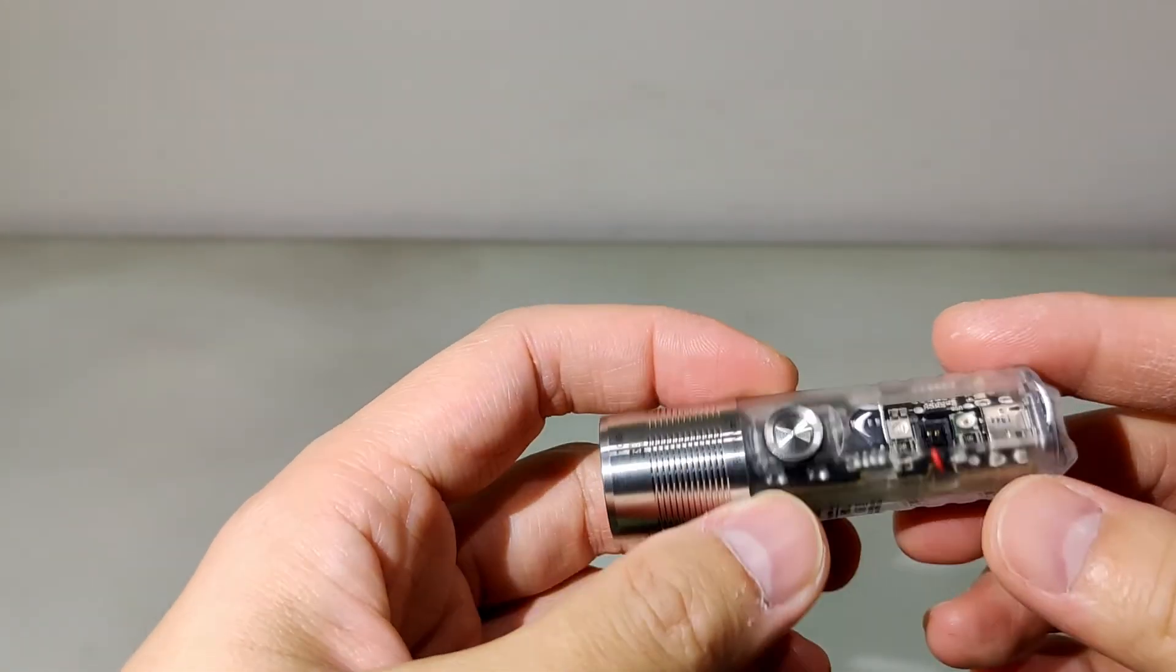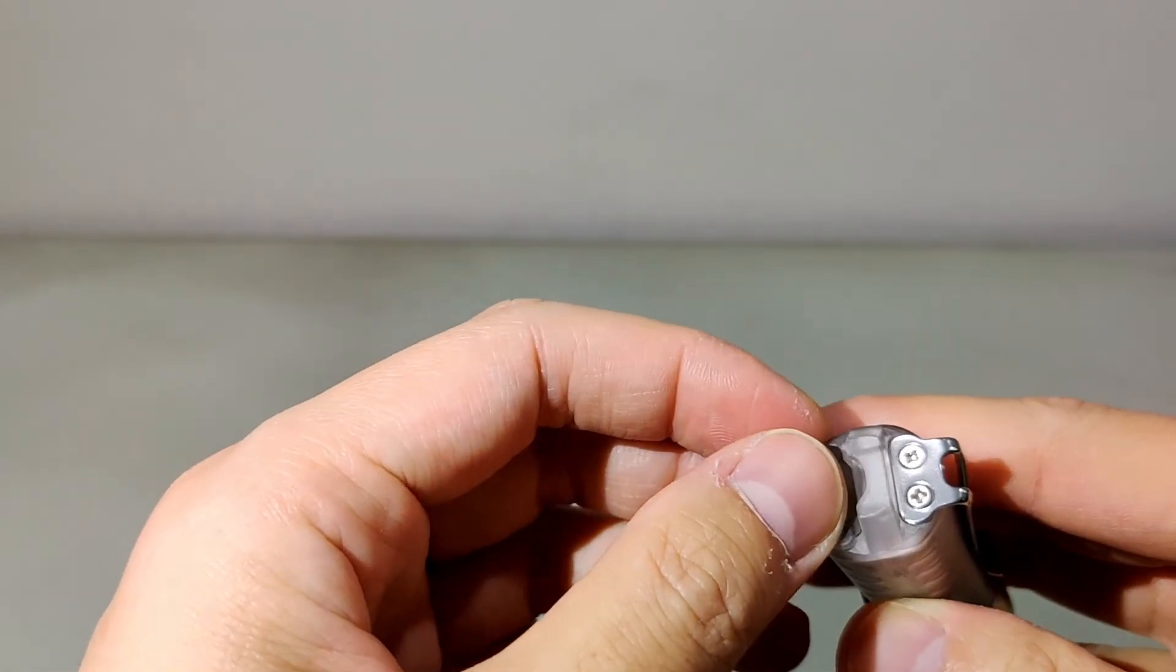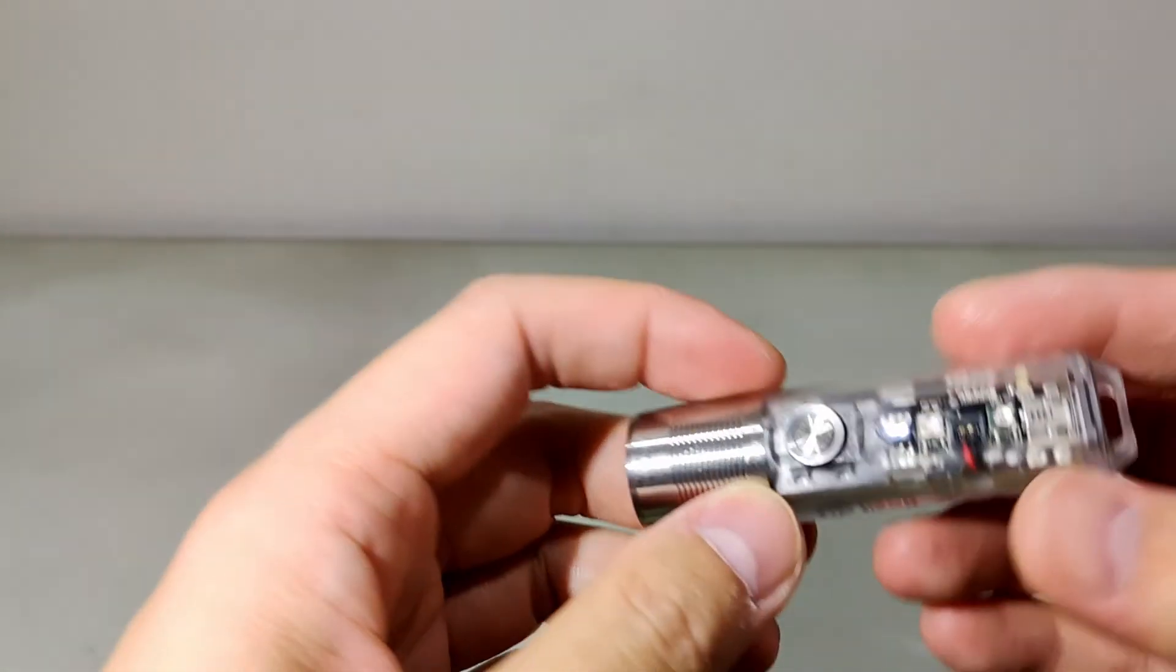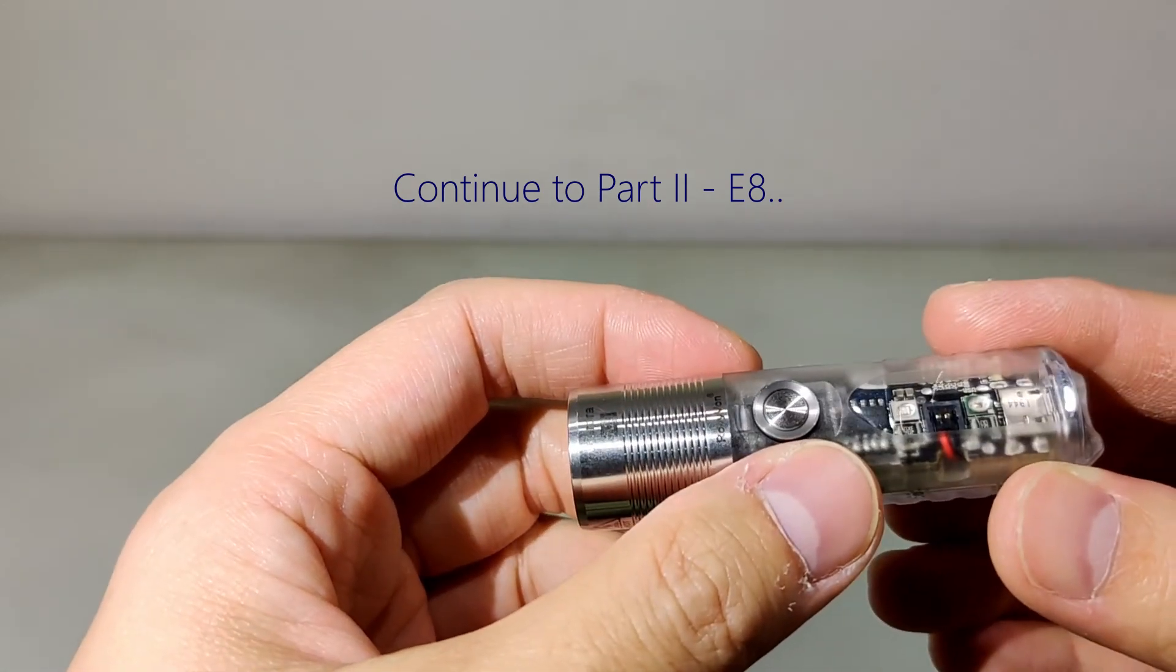Okay, recap for the cons. Number one, no USB Type-C yet, still using micro USB. Number two, no moonlight mode which is a deal breaker for me. Number three, only two different side LEDs instead of three. And number four, using proprietary battery.